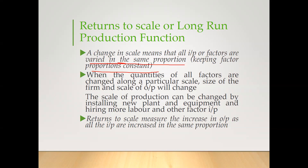The same thing is applicable here. When the quantities of all factors are changed along a particular scale, the size of the firm and scale of output will change. The scale of production can be changed by installing new plant and equipment and hiring more labor and other factor inputs. That is why we call it return to scale — because in the short run production function, which we called return to factor, we were only changing a few factors while the rest were constant. But in the long run, the entire scale is changing — nothing is fixed, everything is varied. Return to scale measures the increase in output as all inputs are increased in the same proportion.